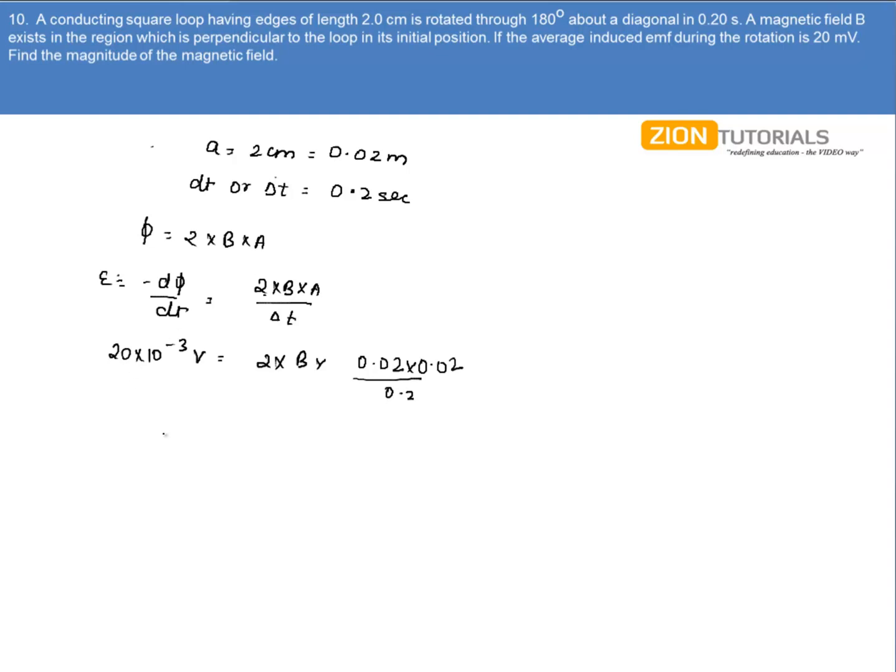Now on solving this equation for magnetic field we get the value of magnetic field as 5 tesla, that is the answer.